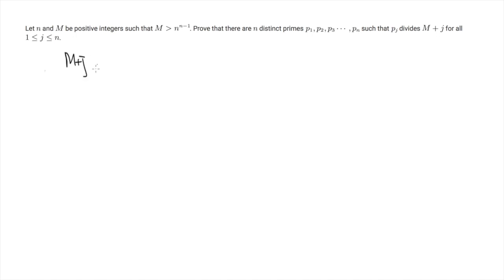Indeed, the idea is quite simple. If we take two numbers M plus J and M plus K, and we take the GCD, the greatest common divisor between them,